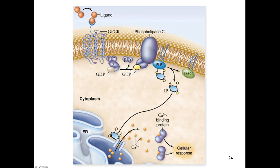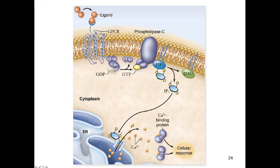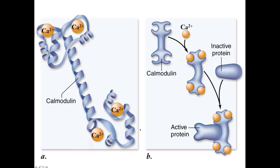This happens when IP3 diffuses away from the membrane where it was cleaved from PIP2, causing the release of calcium by binding to channel proteins in the ER membrane. These channels open in response and allow calcium to flow into the cytoplasm.